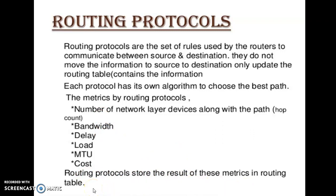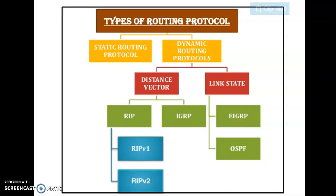The routing table is basically a collection of metrics of different kinds such as number of network layer devices, bandwidth, delay, load, MTU, and cost. Next, we will try to understand what are the different types of routing protocols.